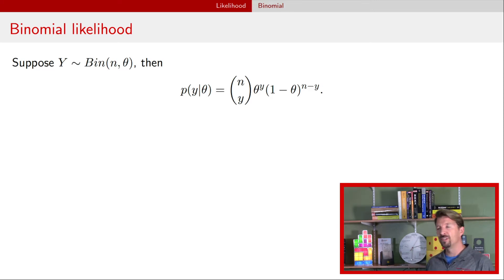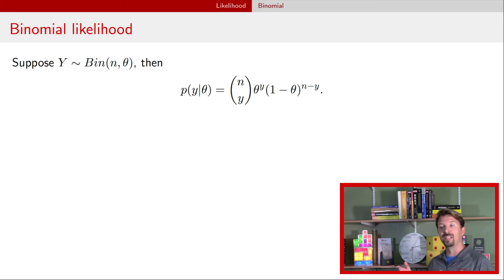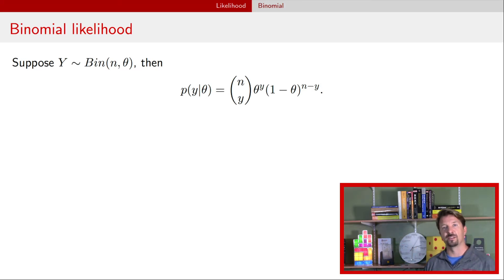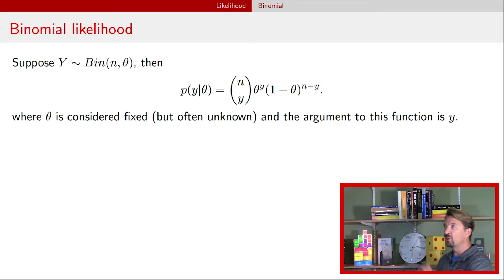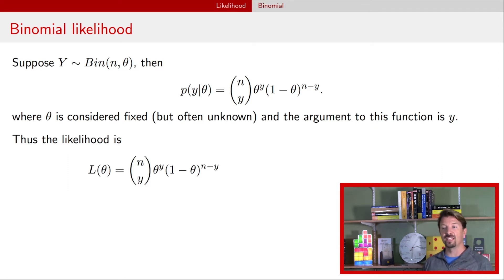The binomial distribution probability mass function is given right here. n is the number of attempts, y is the number of successes, and theta is the unknown probability of success. This right here is the model for a binomial distribution — that probability mass function. But now, if we turn it around and think about theta not as being fixed and known, but as the value that we're going to modify, and y as being fixed, we have the likelihood.